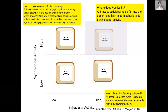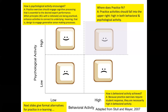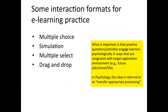You want to design to engage generative sense-making processes. With skills — another kind of knowledge component that is often more implicit and may not have a deep or articulated rationale — you still want to be engaging students in psychological activity. We can format practice different ways, and here are some examples of how that can be done in an e-learning setting.